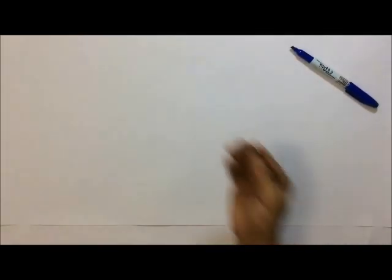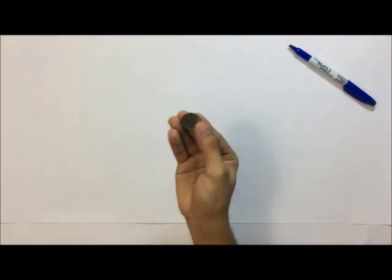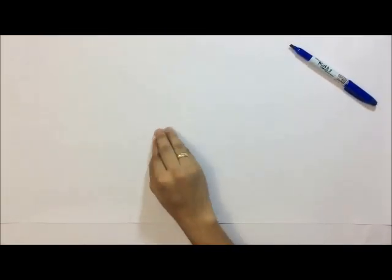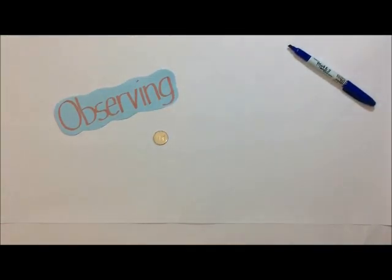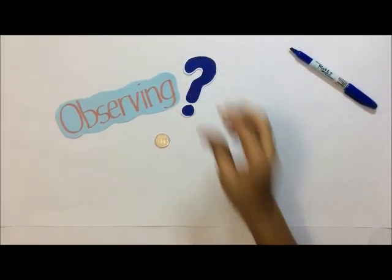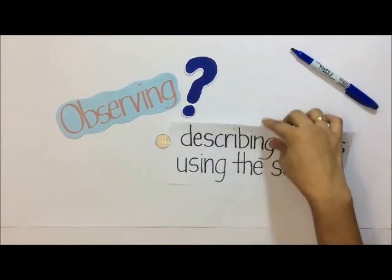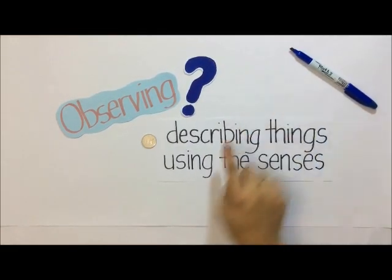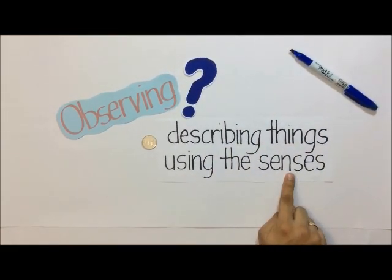I have here an object. If I ask you to observe the object, what will you do? What does observing mean? Observing means describing things using the senses.